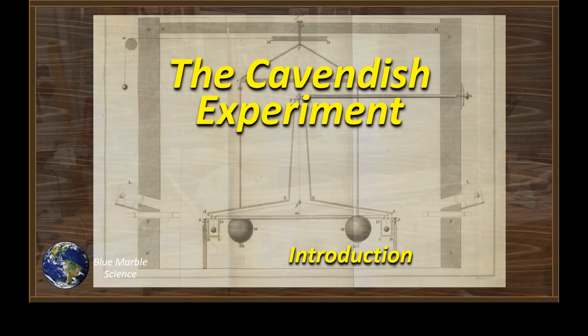Cavendish was an English natural philosopher and scientist who lived in the 1700s and early 1800s. He was a fellow of the Royal Society of London, and he's most famous for a couple of things: the discovery of the element hydrogen, but maybe much more importantly, his work in determining the density of the earth.